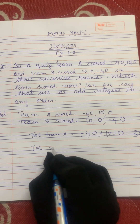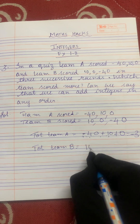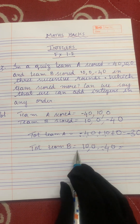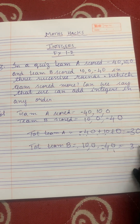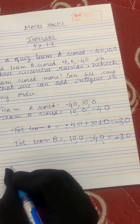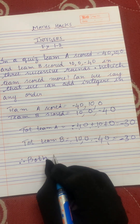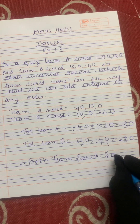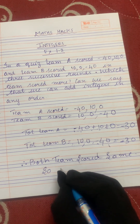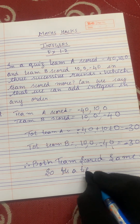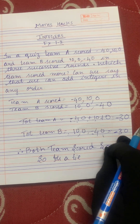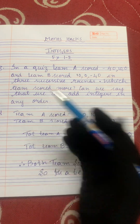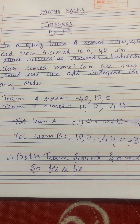Now let's take the total of team B. The marks are 10, 0, and minus 40. Plus 10 into minus gives you minus, so 10 minus 40 gives you 30 — minus 30. So both teams scored the same marks. Therefore both teams scored the same — it's a tie between team A and team B, because both scored minus 30. Which team scored more? Neither — they have a tie.